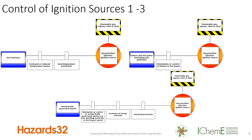Also within that standard, clause six within EN 1127 gives a list of potential risk reduction measures. For each of the 13 ignition sources, it lists what could be potential prevention measures — whether it be avoidance, control, etc. For hot surfaces, flames, hot gases, and sparks, these are the more familiar ignition sources.